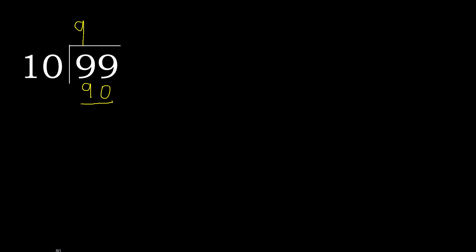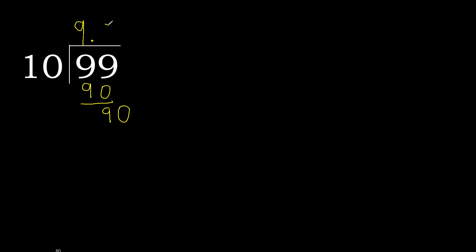99 minus 90 is 9. Next, that is not a number therefore complete — always complete with 0 here, with a point: 0 point. 90. 10 multiplied by 9 is 90, which is not greater.